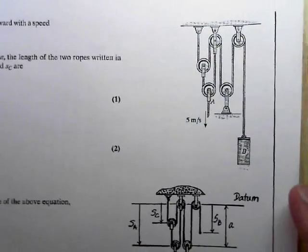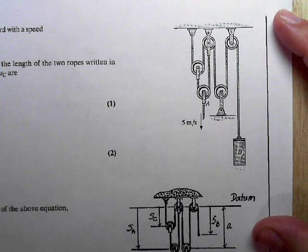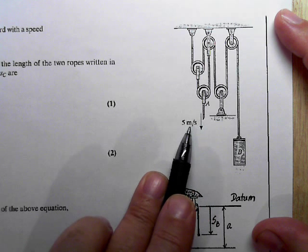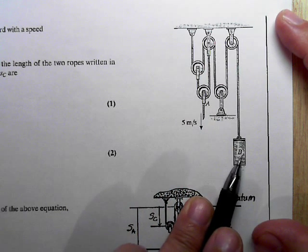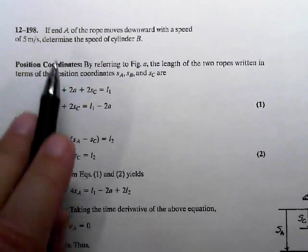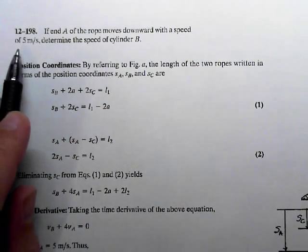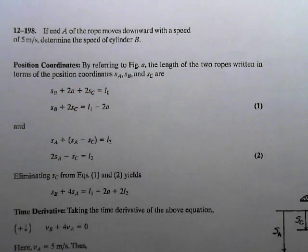And it says we have this rope configuration right here, and we're going to be pulling here at a certain speed, 5 meters per second, pulling at point A, and we're going to want to know the velocity of the block at B. And so the problem statement says if end A of the rope moves downward with a speed of 5 meters per second, determine the speed of the cylinder B.